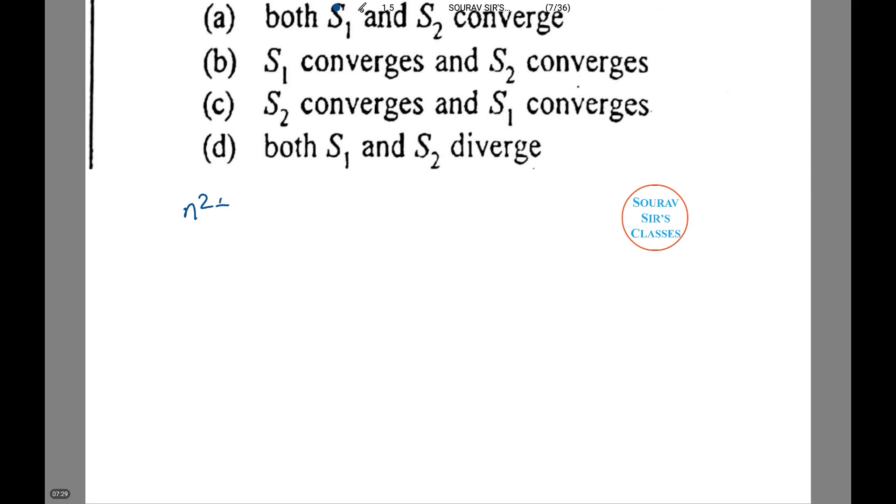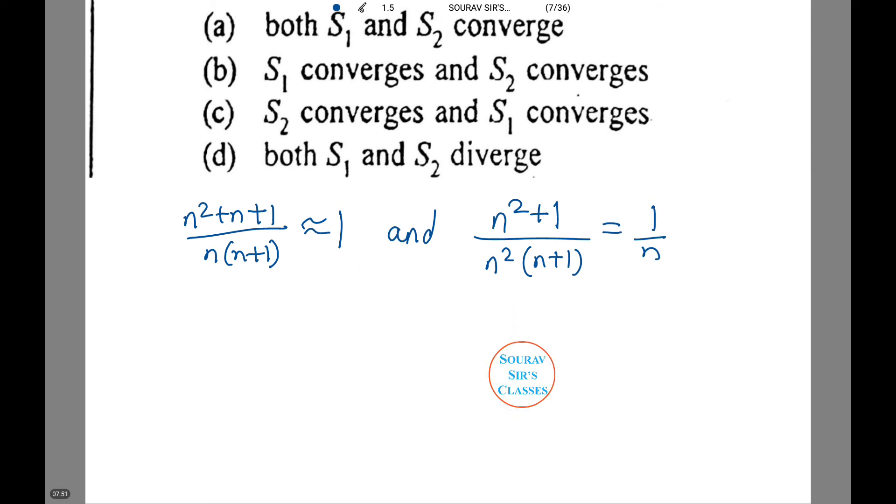n square plus n plus 1 by n times n plus 1, which roughly equals 1. And n square plus 1 by n square times n plus 1, which equals 1/n. So, both S1 and S2 are divergent. That is option D. Now, let's try another sum.